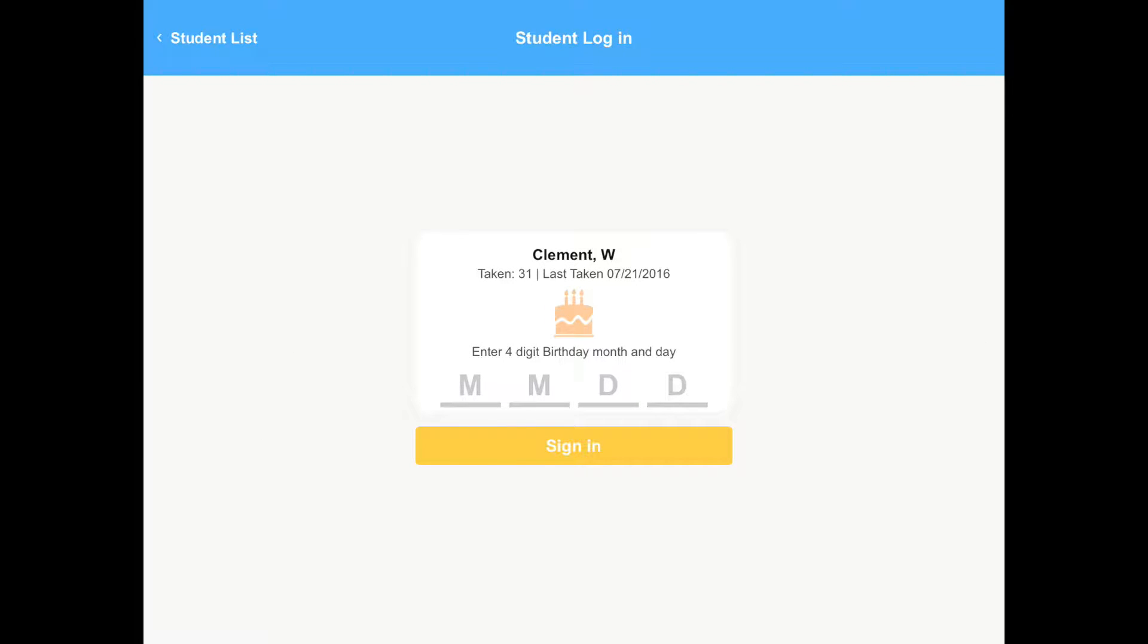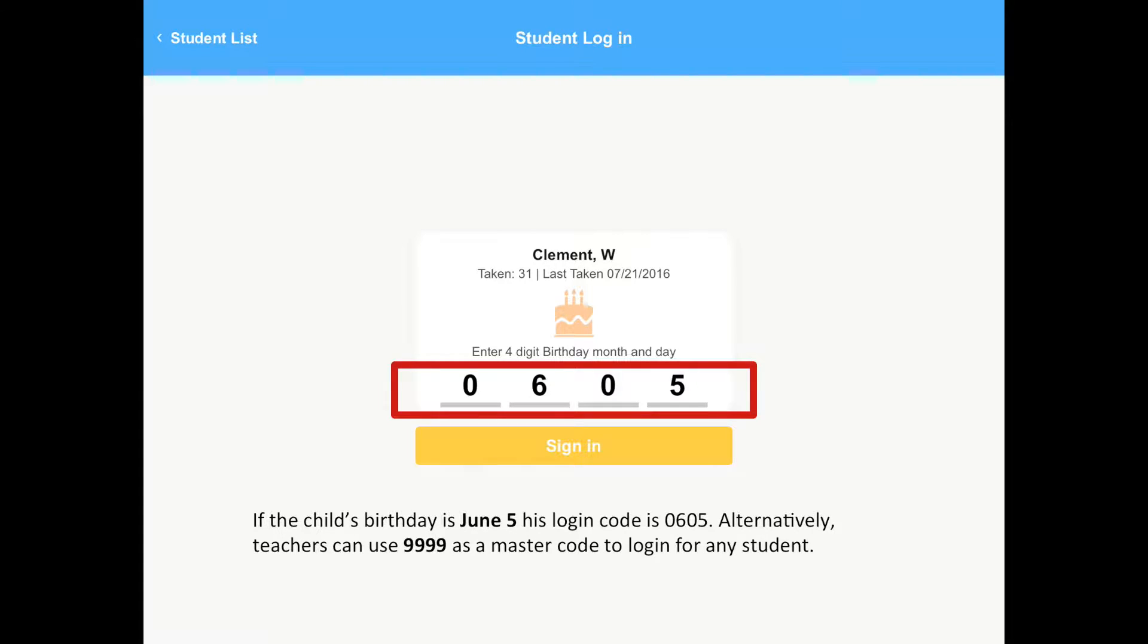Once you select the student you want to test, the student or you, the teacher, enter his four-digit birthday to log in. If the child's birthday is June 5th, his login code is 0-6-0-5. Alternatively, teachers can use 9-9-9-9-9 as a master code to log in for any student.